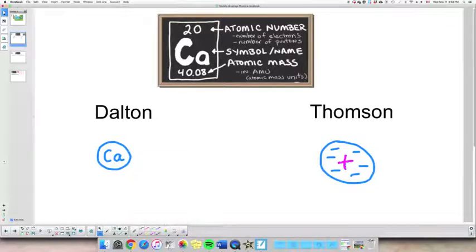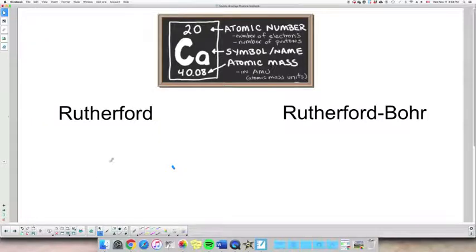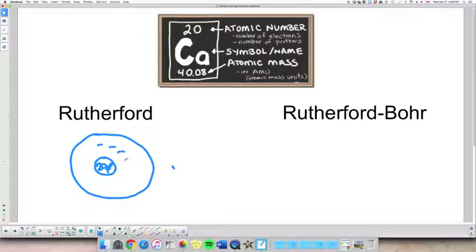Now if we apply the same atom to the Rutherford model, so how would Rutherford draw it? Rutherford did the gold foil experiment if you recall, so he said that there is a tiny nucleus in the center. We need to draw the nucleus and we need to put the protons inside because he discovered the protons. So 20 p plus. And the rest of the atom is hollow, it's empty. There's a lot of space and the electrons are scattered inside.